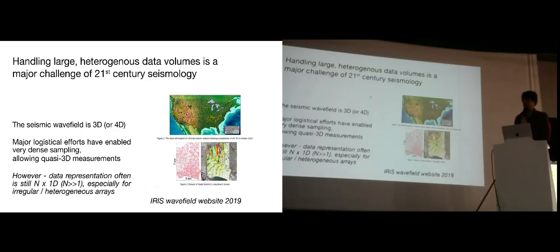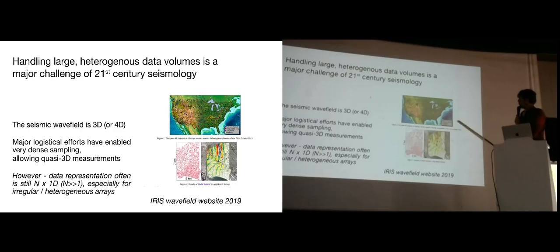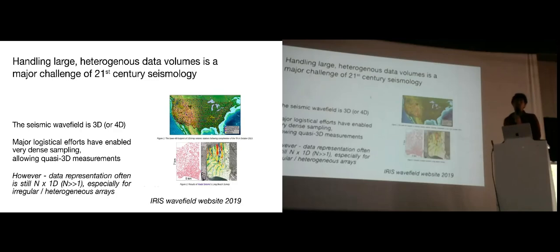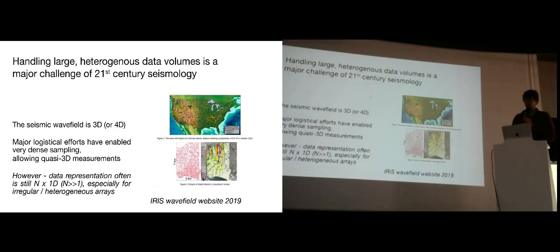4D if you manage to have access to the depth resolution, which is not very common yet but hopefully will become more common in the future. So what can we do with these very large N-by-1D representations to turn them into what we really want — the full seismic wave-field in 3D or 4D — incorporating the spatial coherency that's inherent in seismic wave-propagation?